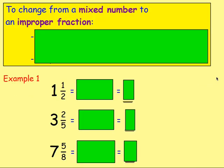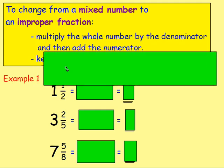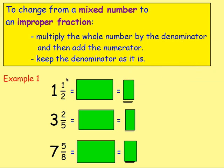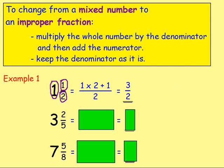We need to be able to change from a mixed number to an improper fraction. To do that, multiply the whole number by the denominator, then add the numerator, and keep the denominator as it is. For one and a half: one times two, plus one, over two. One times two is two, add one gives three — so one and a half is the same as three over two.